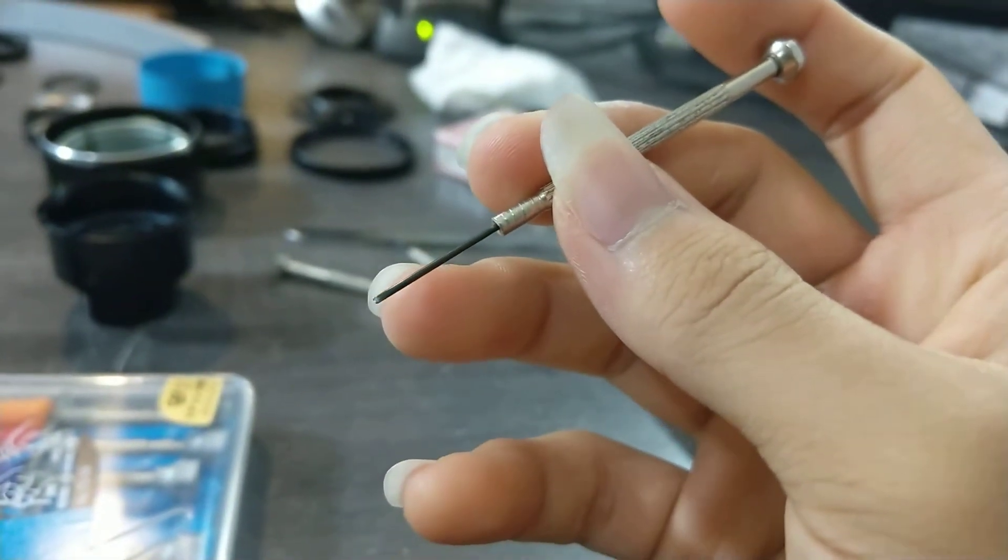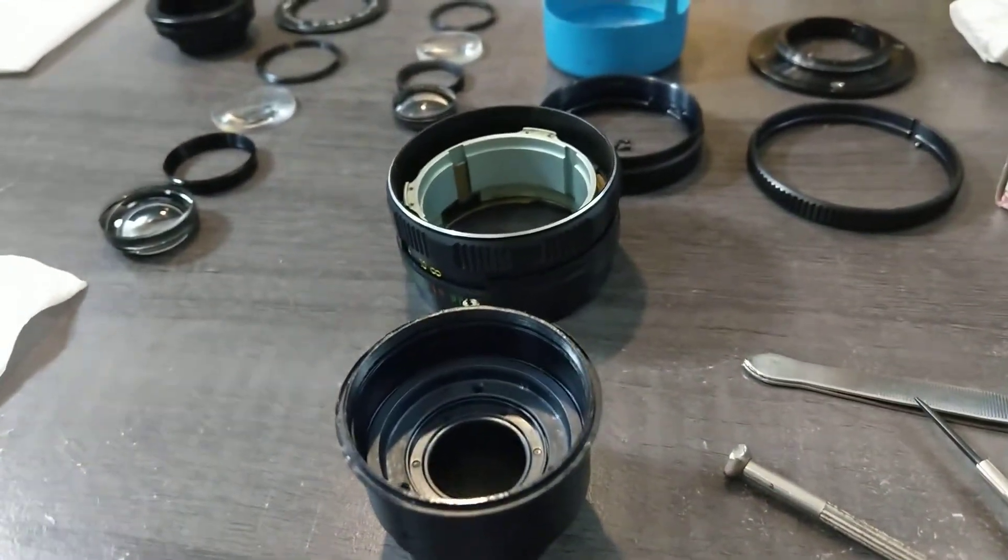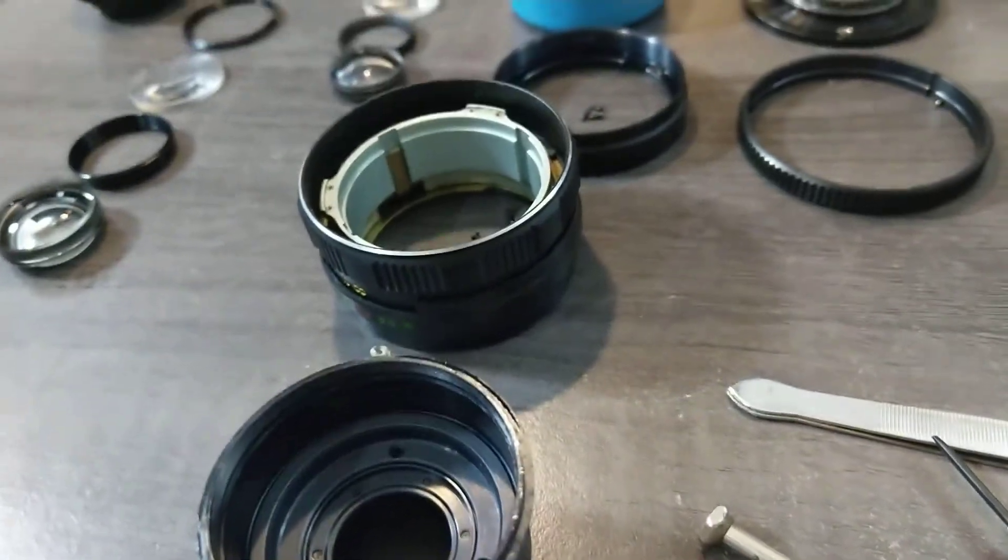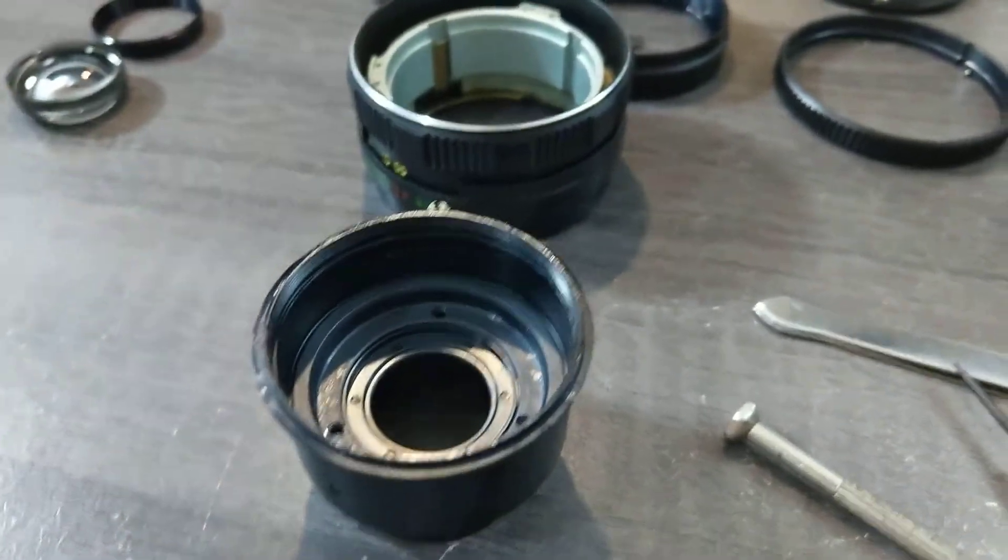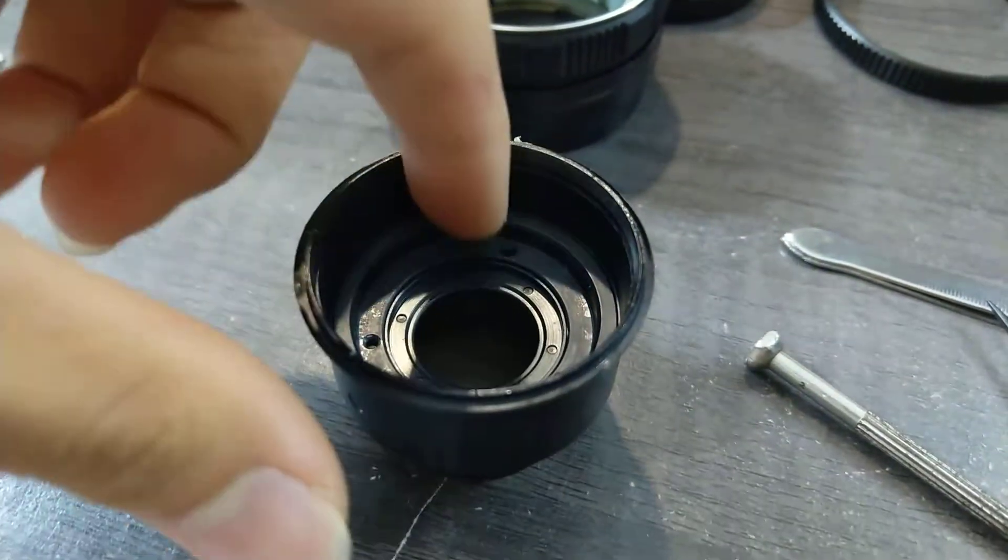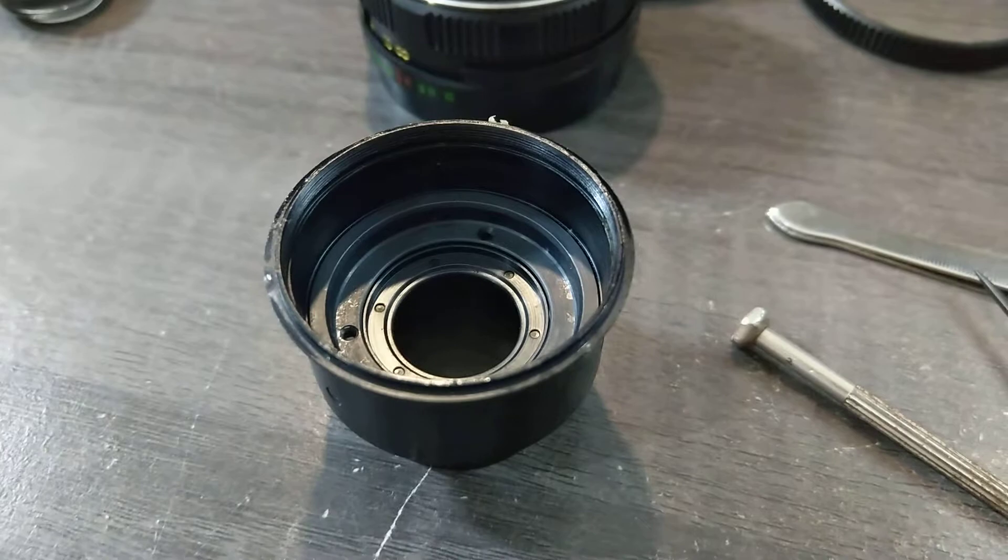Just now I was opening this Helios 44 M5. As you probably know, you have these little screws over here that hold in the aperture block. This thing has an oily aperture, let me show you. I uncoupled the screws but the aperture is stuck, so I decided to open up these screws.